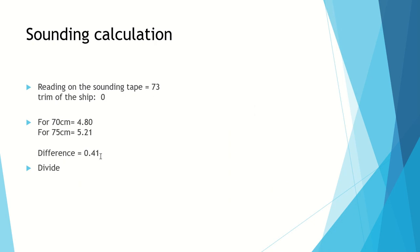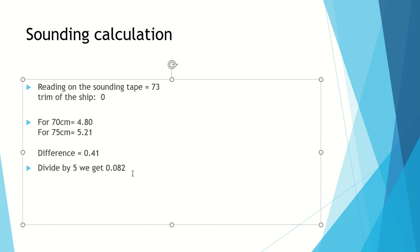Now you take the difference, so 5.21 minus 4.80 equals 0.41 meter cube. Now this is for five divisions. Let's divide 0.41 by 5, we will get 0.082 meter cube.